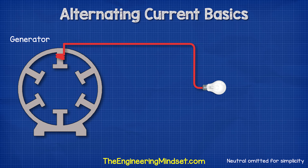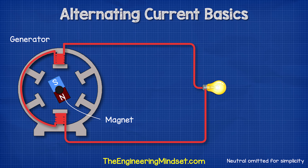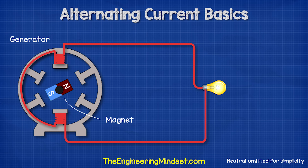If we followed the copper wires back to the generator, the wires are connected to some coils of wire which sit within the generator. Inside a basic generator, we also find a magnet at the centre which is rotating. The magnet has a north and south pole, or you can think of it as a positive and a negative half.